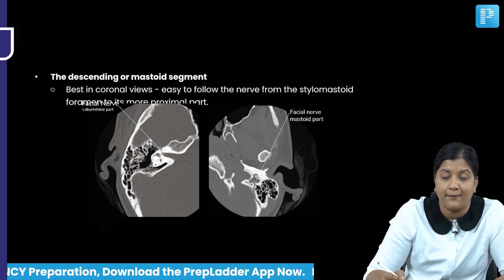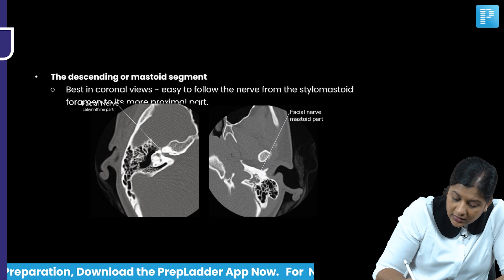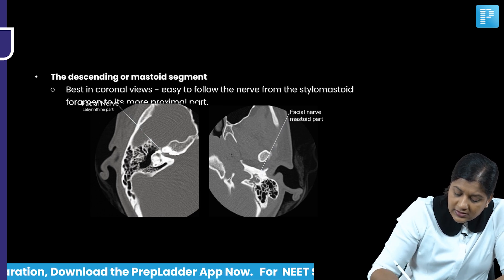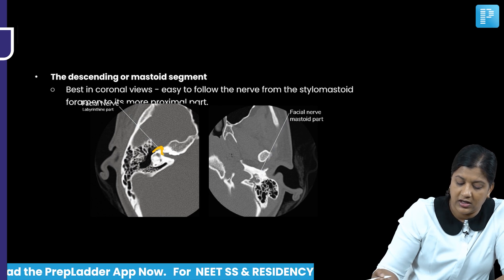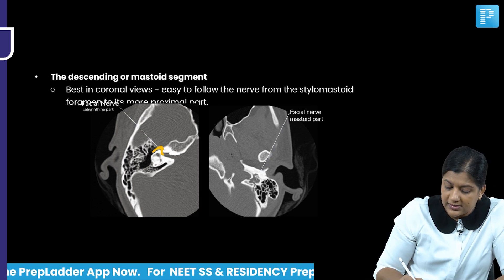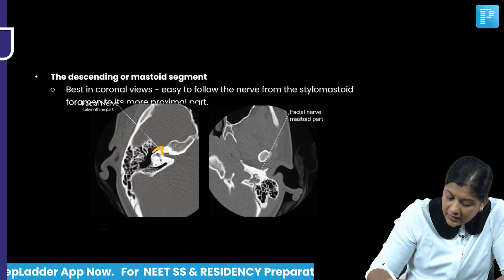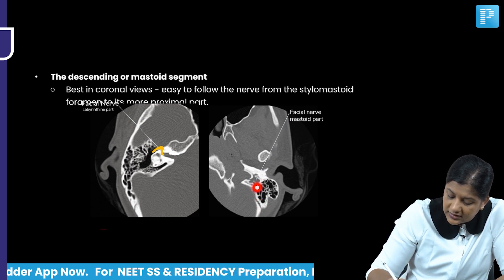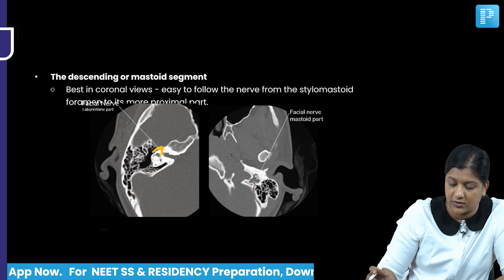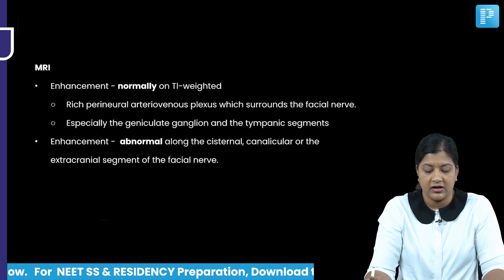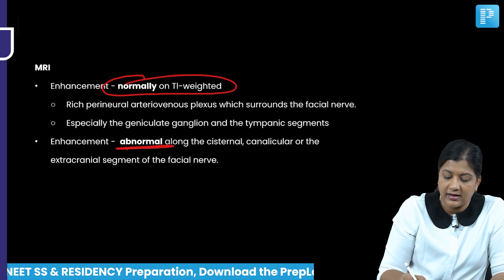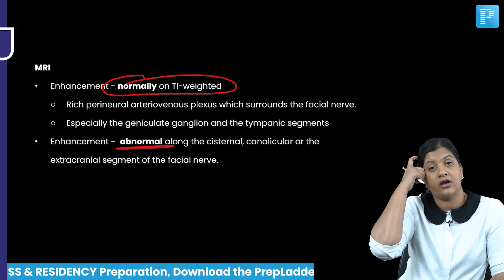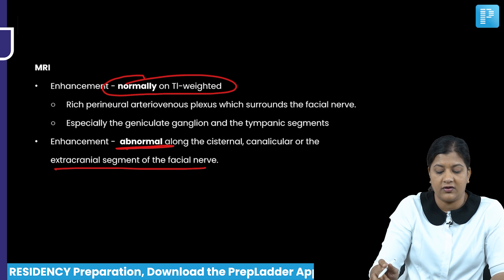On CT, the internal auditory canal leads to the labyrinthine segment, which turns to become the medial wall of the middle ear — this bend is the geniculate ganglion. The facial nerve in the mastoid part can also be identified. On T1-weighted MRI, the facial nerve normally enhances; abnormal enhancement should prompt examination of the cisternal, canalicular, or extracranial segments.